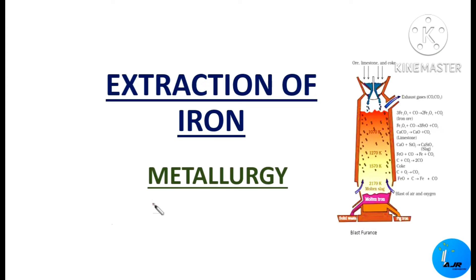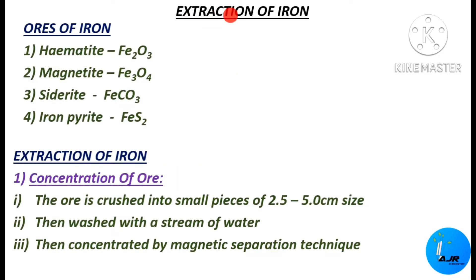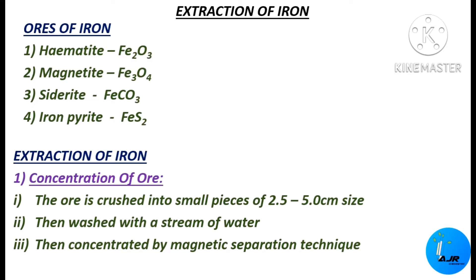Hello students, this is Dr. Anita Raj, your chemistry mentor, welcoming you for one more session in metallurgy. In this session we shall see an important topic: the extraction of iron from its ore. Before going to the topic, we should see the different types of iron ores. The first one is hematite, Fe₂O₃; magnetite, Fe₃O₄; siderite, FeCO₃; and iron pyrite, FeS₂. In this extraction of iron, we are going to make use of the hematite ore, Fe₂O₃.